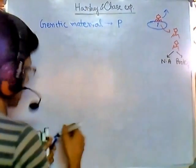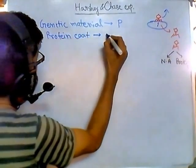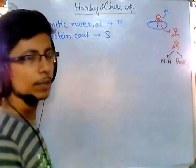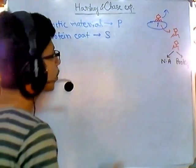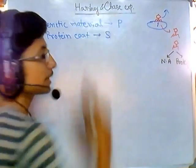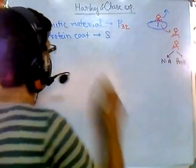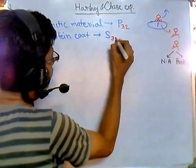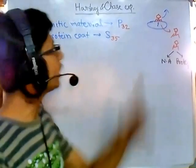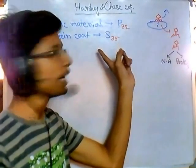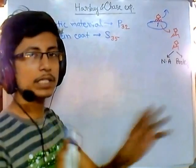The protein coat contains sulfur — not all proteins have sulfur, but cysteine and methionine do. So they labeled the protein coat with S35, an isotope of sulfur. They chose sulfur and phosphorus because phosphorus is only present in DNA and not in protein, and sulfur is not present in the genetic material. This ensured the two labels were completely separate with no overlap.